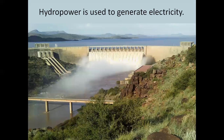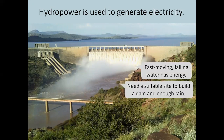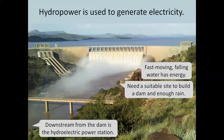Hydro power is used to generate electricity. Fast-moving, falling water has energy. We need a suitable site to build a dam and enough rain. Downstream from the dam is the hydroelectric power station.